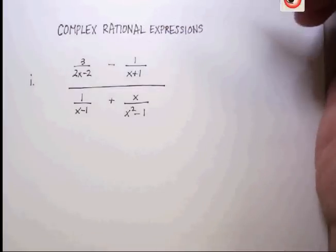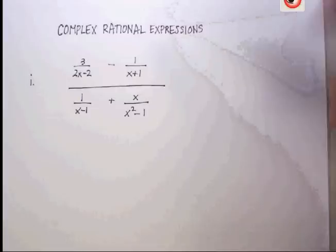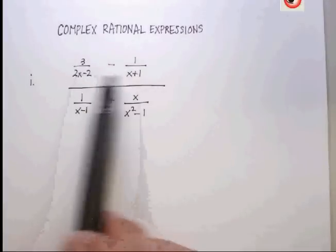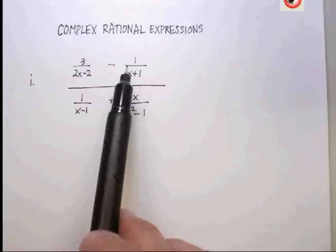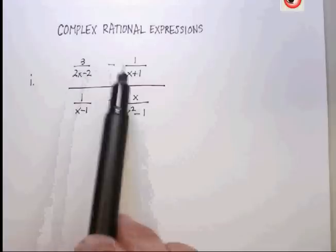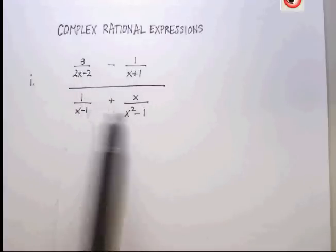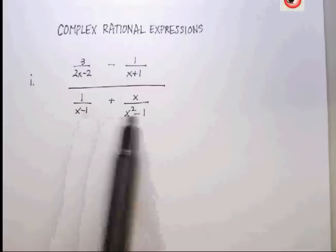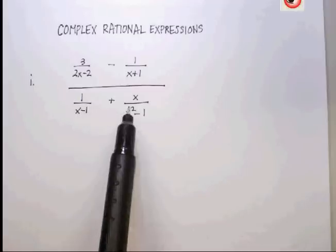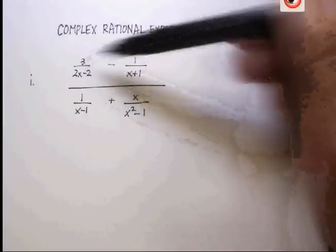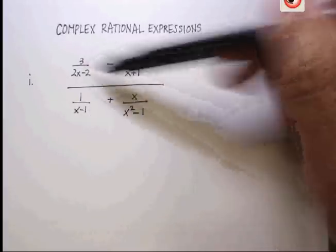Basically, a complex rational expression is having an addition or subtraction of two rational expressions divided by an addition or subtraction of two rational expressions. Now remember what a rational expression is - it's basically just fractions but using polynomials instead of just straight numbers.